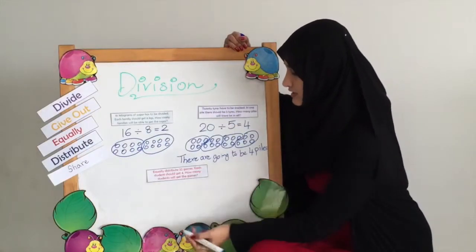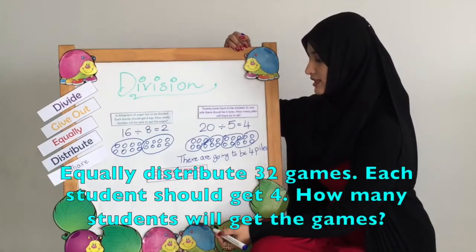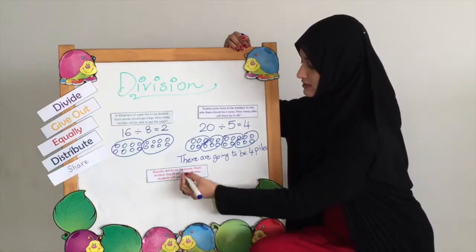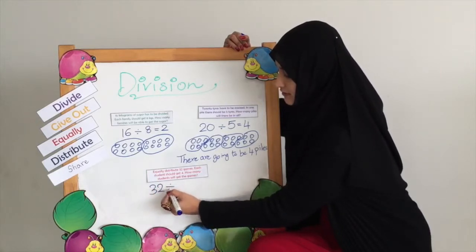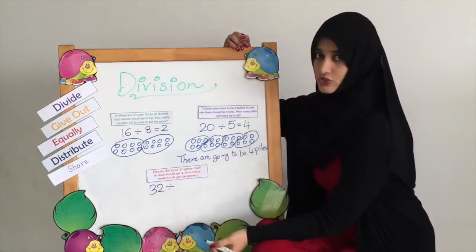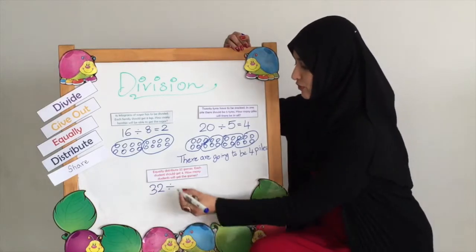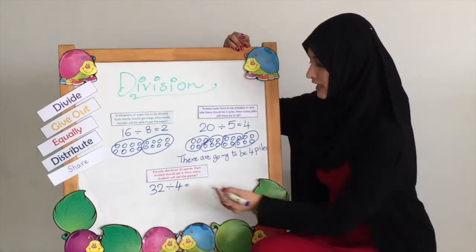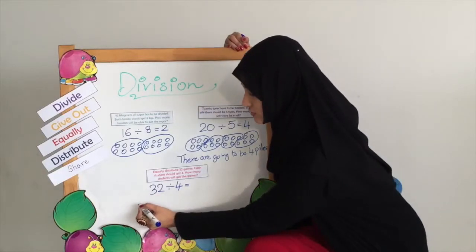The next question: equally distribute 32 games. Each student should get 4. How many students will get the games? They have given us 32 games — that's the total number of things we have. We need to distribute them so that each child gets 4, which is the set size. We are going to first draw 32 games.